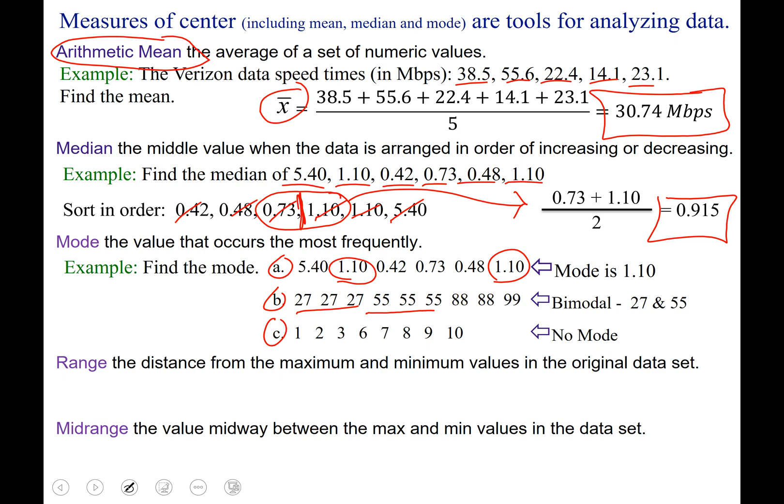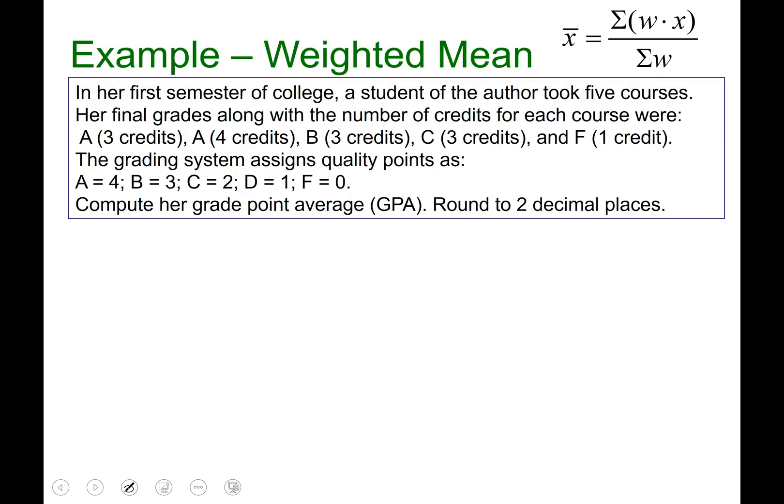A range is the distance from the maximum and minimum values in the original data set. So you take the maximum and minimum, subtraction gives us the distance that we're looking for. And for midrange, that would be the value midway between the maximum and minimum values in a data set. So to find the middle, we would add and divide by 2. Just like finding the average for the arithmetic mean. We add them up, divide by 2.